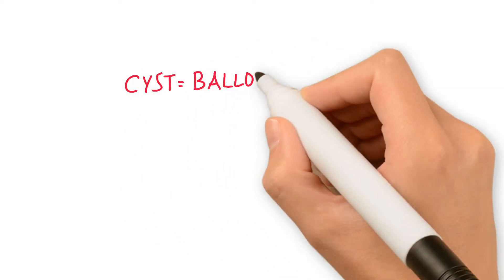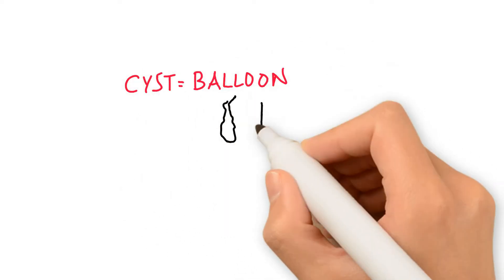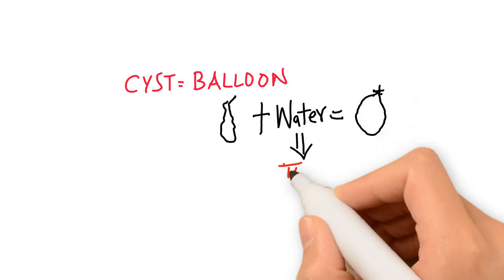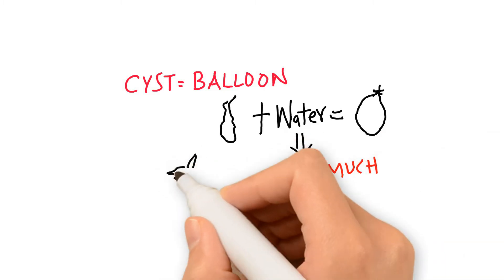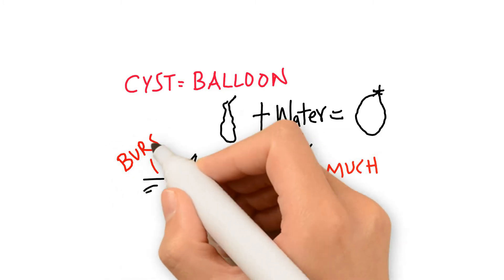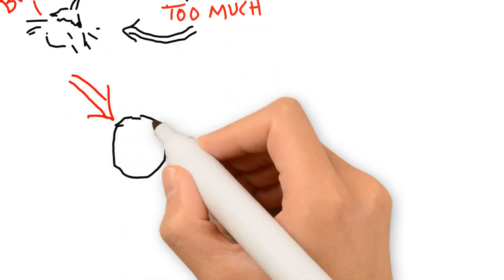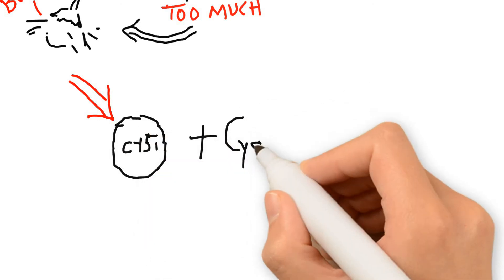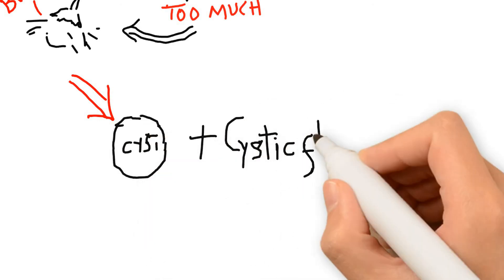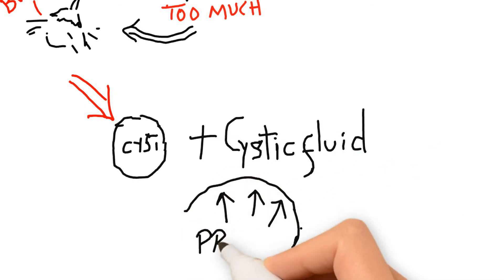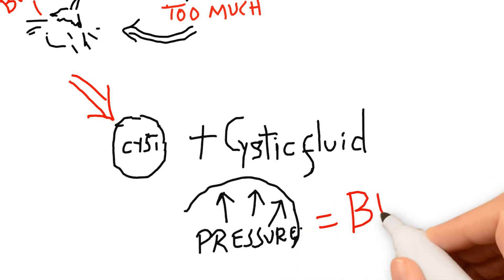Think of an ovarian cyst as a balloon. If you add water in a balloon, it becomes round and firm. But if you add too much water into it, it will grow larger and then burst. The same thing happens to an ovarian cyst. As more cystic fluid moves into the ovarian cyst, it grows larger. However, it reaches a point where there is too much fluid in the ovarian cyst. This additional fluid exerts a lot of pressure on the walls of the ovarian cyst, causing it to burst. This is what is known as an ovarian cyst rupture.